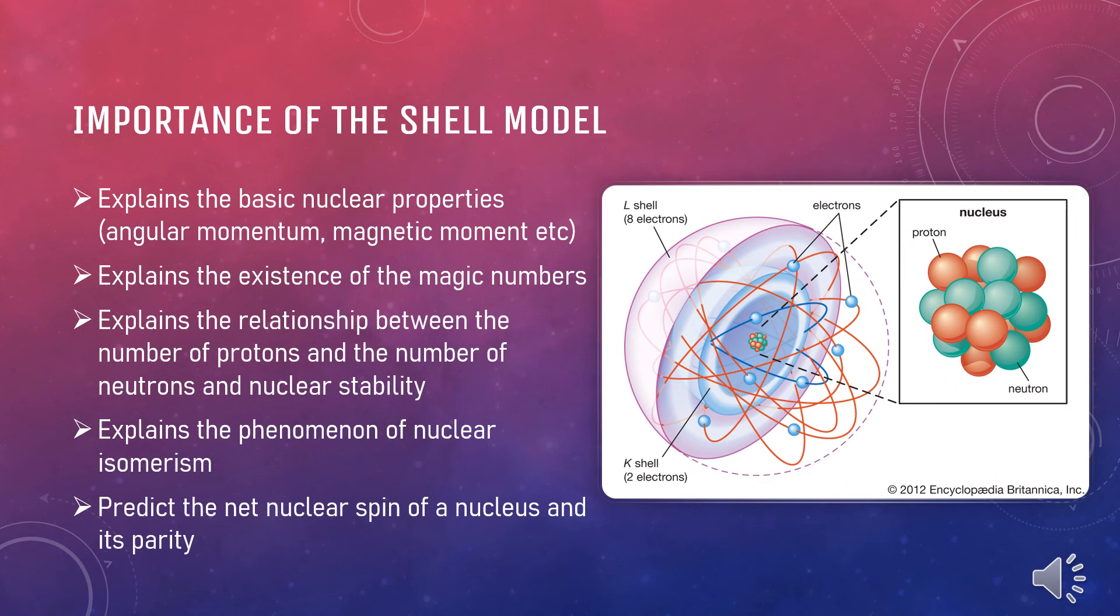Some of the most significant importance of the shell models are: it explains the basic nuclear properties like the angular momentum and magnetic moment. It explains the existence of magic numbers. It also explains the relationship between the number of protons and the number of neutrons and the nucleus stability. It also explains the phenomenon of nuclear isomerism and it can also predict the net nucleus spin of a nucleus and its parity.